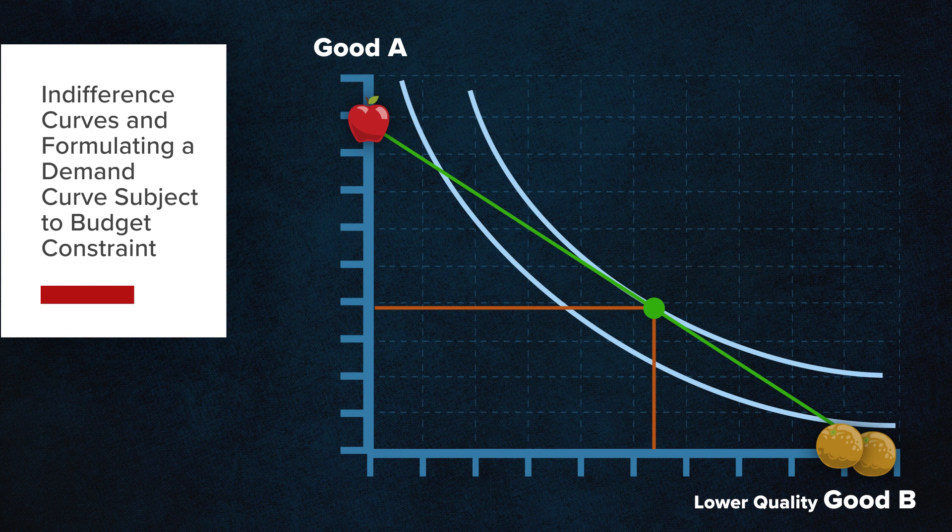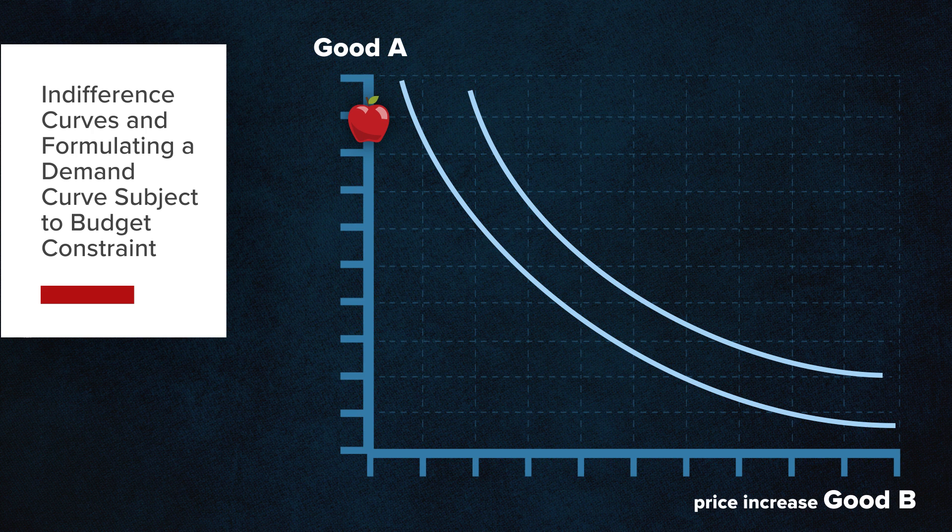Now consider that the price of good B increases. This has the same effect as reducing the consumer's income. Once again, the consumer can still afford a maximum quantity of good A should he buy none of good B. On the other hand, due to the increase in price of good B, he could afford a smaller amount if he bought none of good A.